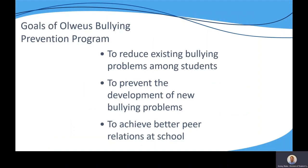The goals of OVEAS are to reduce existing bullying issues, prevent new bullying problems, and to improve peer relations throughout the school by restructuring the school environment so that both opportunities and the social rewards for bullying behaviors are reduced. In addition, OVEAS pairs extremely well with PBIS processes that may currently be in place in your school.